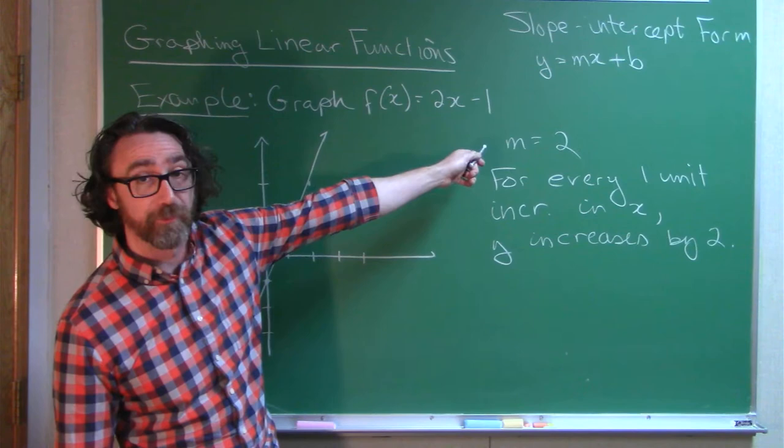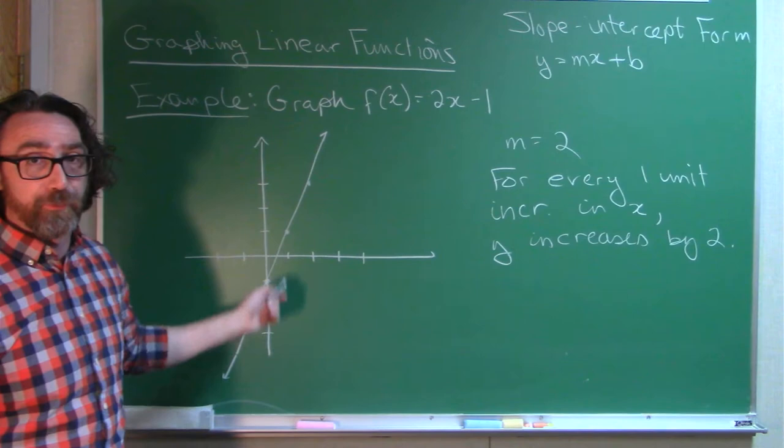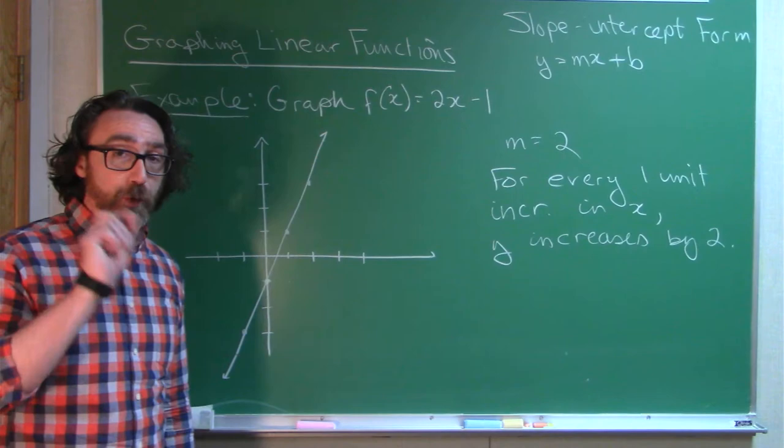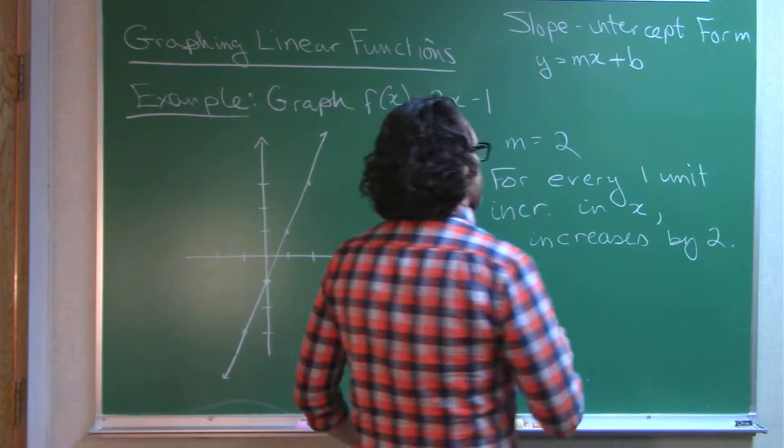You can check that with your function notation. Plug negative 1 in for x on the left, and then substitute negative 1 in for x on the right, and you'll see f(-1) is negative 3. So very easy to draw the graph of a linear function quickly and accurately, by looking at the slope.